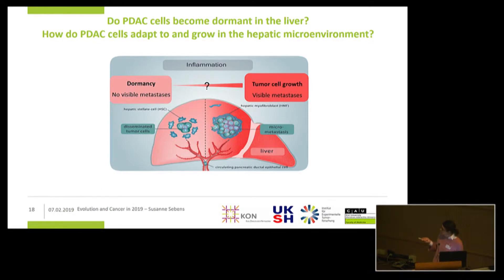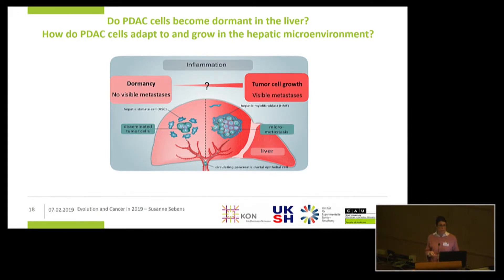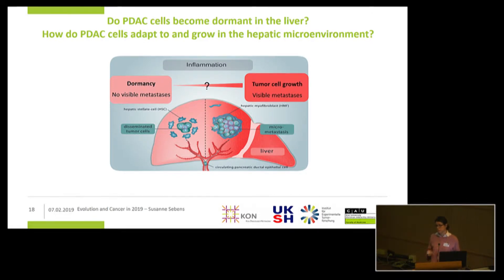When talking about inflammation of the liver, one cell population is of pivotal importance: the hepatic stellate cells, which only account for up to 5–10% of the entire liver cell population. However, upon injury and infection, these cells transdifferentiate into hepatic myofibroblasts, which are a major source of extracellular matrix proteins, growth factors, and inflammatory mediators — and by this, they promote and sustain the inflammation of this organ.